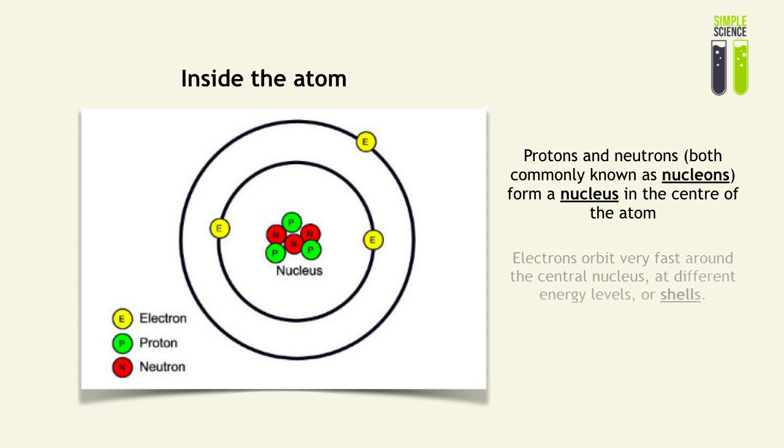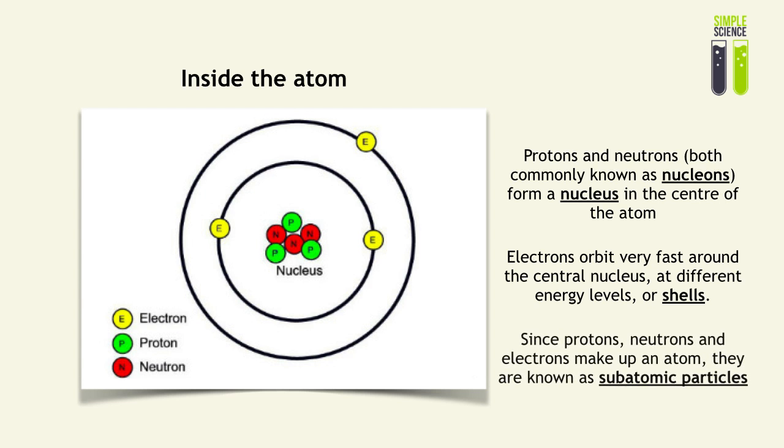And orbiting around this nucleus are electrons. And they orbit around very fast, and they exist in different energy levels, or electron shells. And since protons, neutrons, and electrons make up an atom, and they exist inside an atom, this spherical structure that we are going to assume, they are called subatomic particles.